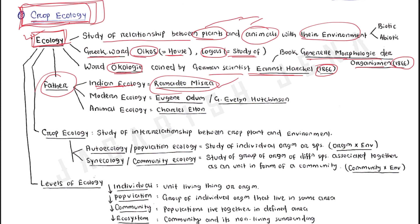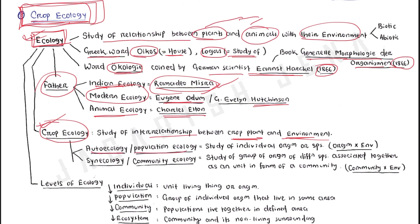Eugene Odum is known as the father of modern ecology. Crop ecology specifically is the study of the interrelationship between crop plants and their environment. Crop ecology is of two types: one is autecology or population ecology, and the other is synecology or community ecology.